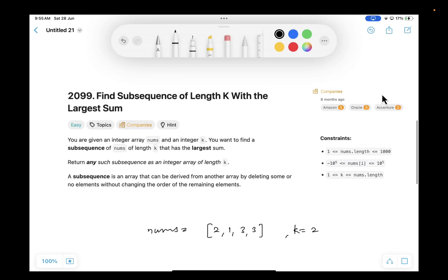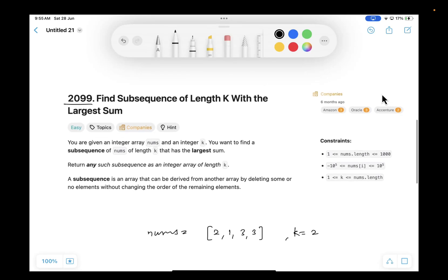Hey everyone, welcome to Code Harmony. Today we are going to solve LeetCode problem ID 2099: Find subsequence of length k with the largest sum. It's an easy problem asked in companies like Amazon, Rikel, and Accenture.